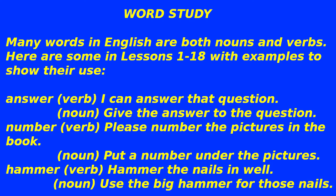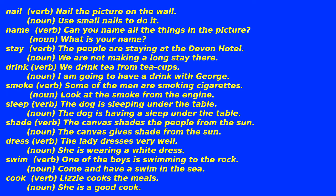Word study: many words in English are both nouns and verbs. Here are some from lessons 1 to 18. Answer — verb: 'I can answer that question'; noun: 'Give the answer to the question.' Number — verb: 'Please number the pictures in the book'; noun: 'Put a number under the pictures.' Hammer — verb: 'Hammer the nails in well'; noun: 'Use the big hammer for those nails.' Nail — verb: 'Nail the picture on the wall'; noun: 'Use small nails to do it.' Name — verb: 'Can you name all the things in the picture?'